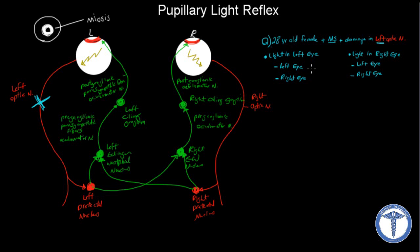So the answer will be: if we shine the light into the left eye, there is no change in the left eye, and there's also no change in the right eye.